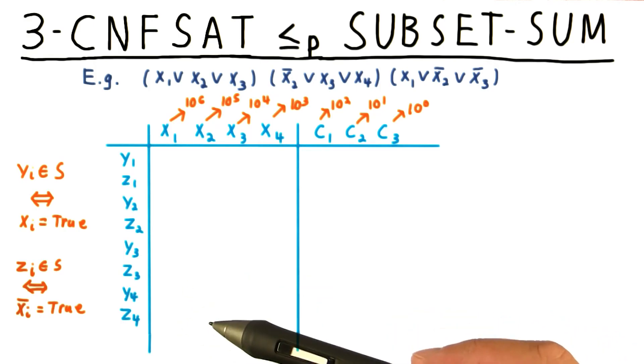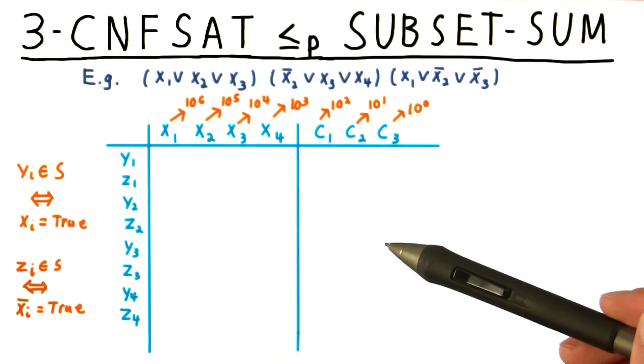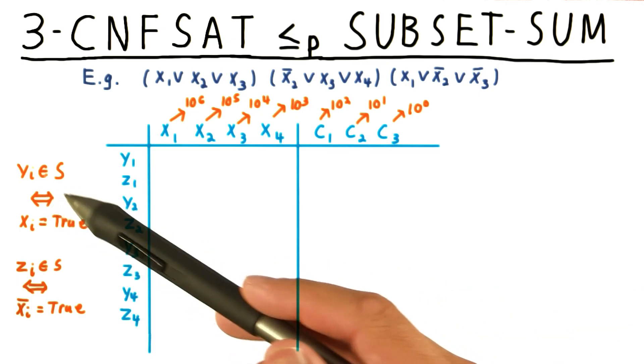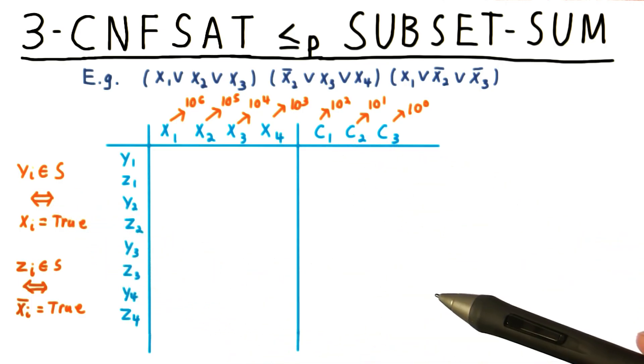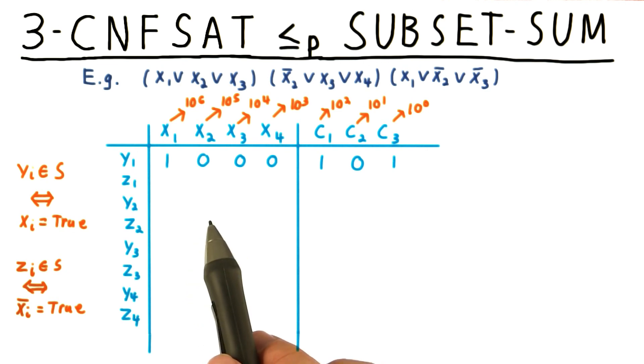To get a satisfying assignment, we also have to satisfy each clause. So we want the numbers yi and zi to reflect which clauses are satisfied as well. Here, then, is how we fill out the table.